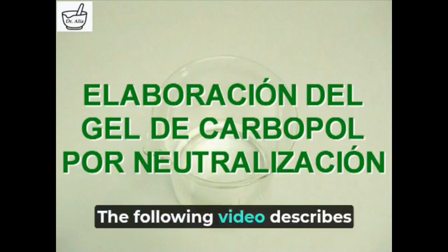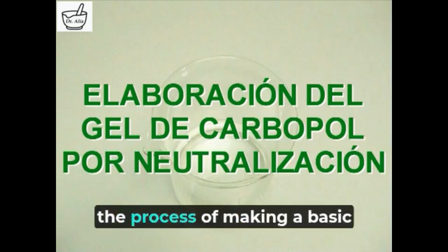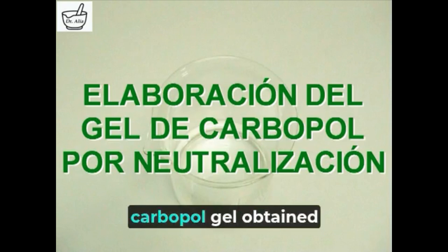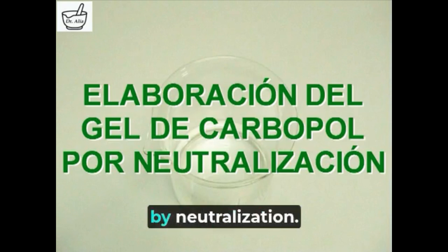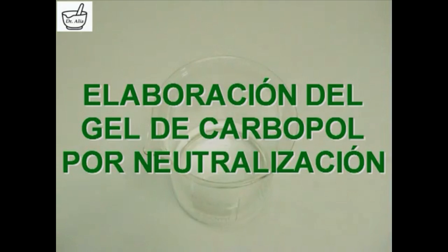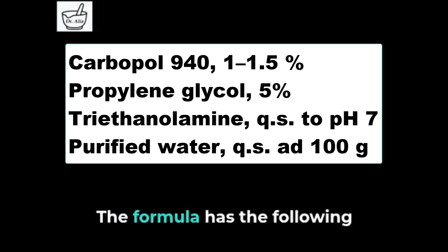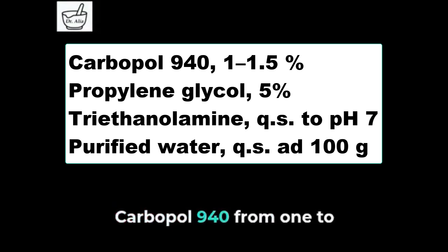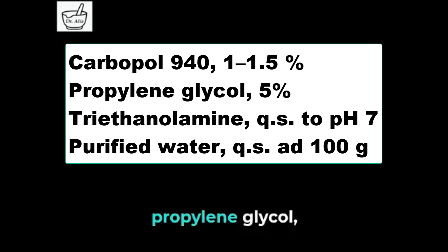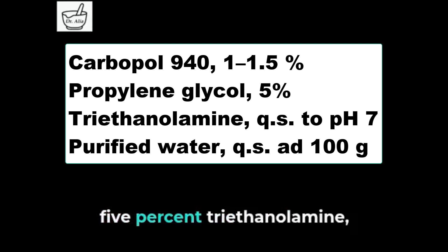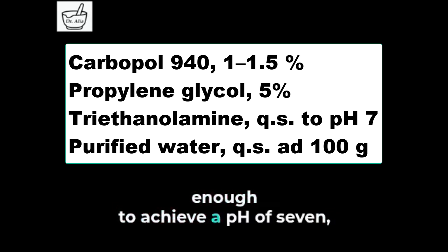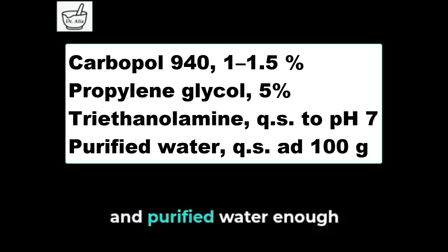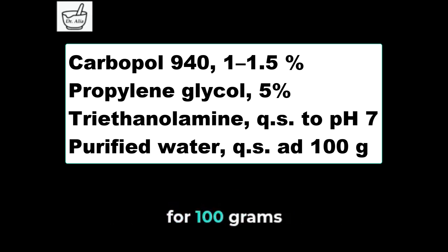The following video describes the process of making a basic carbopol gel obtained by neutralization. The formula has the following composition: Carbopol 940 from 1 to 1.5%, propylene glycol 5%, triethanolamine enough to achieve a pH of 7, and purified water enough for 100 grams.